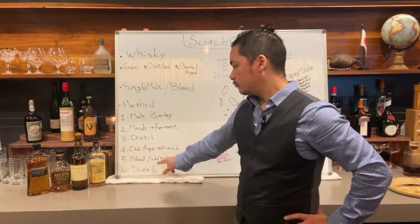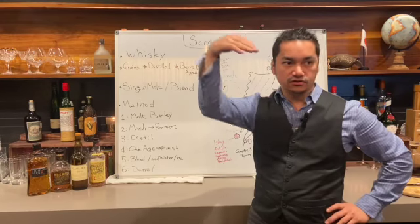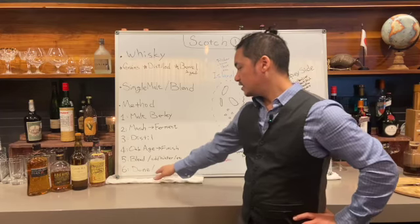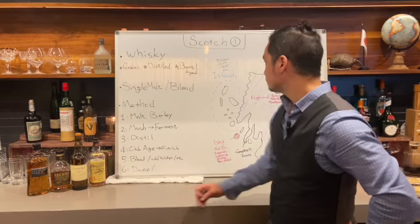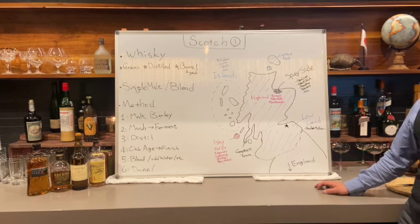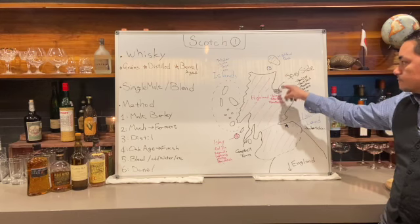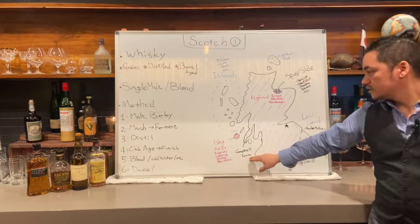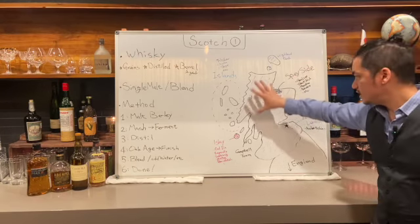After blending you can also add water, because the blend can be around 54–60% alcohol, so you water it down. Now, the regions — there are six major regions: Lowlands, Highlands, Speyside, Islands, Islay, and Campbeltown.